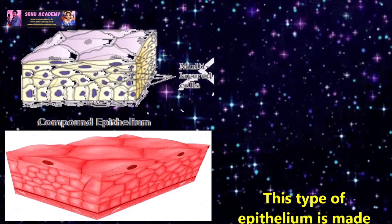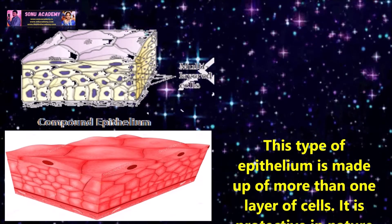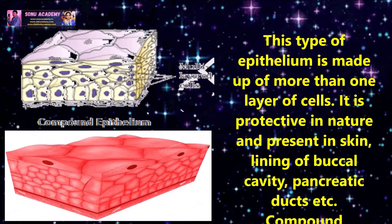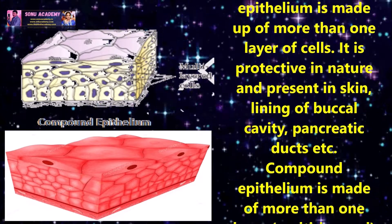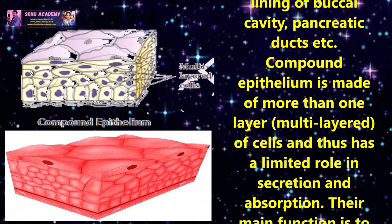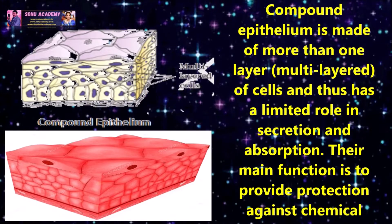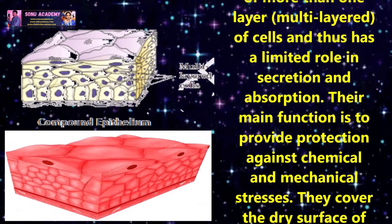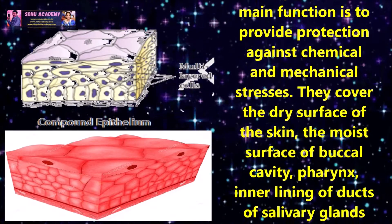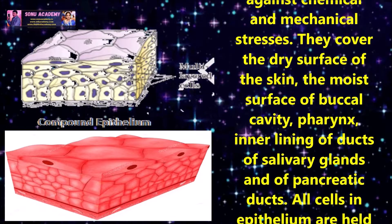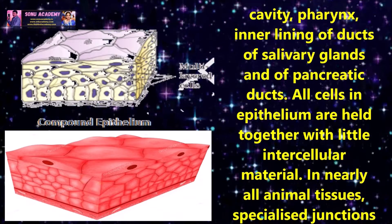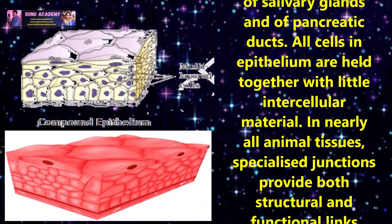Compound epithelium is made up of more than one layer of cells. It is protective in nature and present in the skin, lining of buccal cavity, pancreatic ducts etc. It has a limited role in secretion and absorption. Its main function is to provide protection against chemical and mechanical stresses. It covers the dry surface of the skin, the moist surface of the buccal cavity, pharynx, inner lining of ducts of salivary glands and pancreatic ducts. All cells in epithelium are held together with little intercellular material.